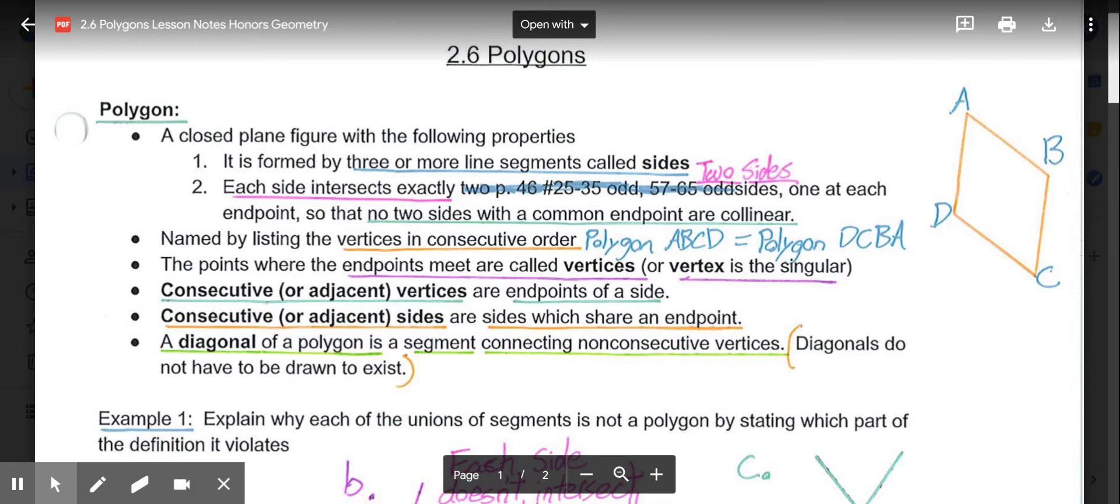Then, the points where the endpoints meet are called vertices. So A, B, C, and D, these points are our vertices, or vertex for singular. Consecutive vertices are vertices that make up the endpoints of the same side. In other words, vertices that are consecutive to A would be B, because they make up the same side, and D. So A's consecutive vertices would be B and D.